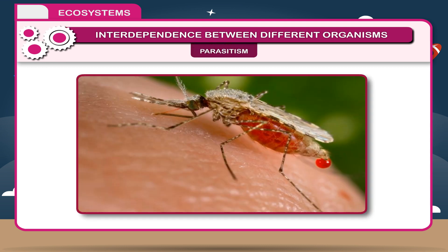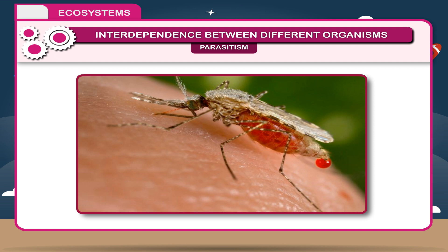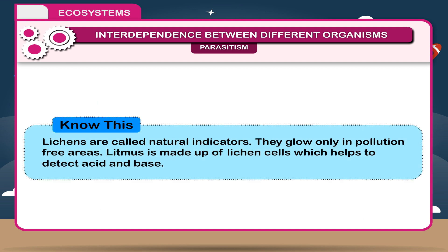Parasitism. A typical parasite lives inside the host. Parasitism is an interaction between two species in which one organism obtains its food from the host body. Lichens are called natural indicators as they grow only in pollution-free areas. Litmus is made up of lichen cells which help detect acid and base.